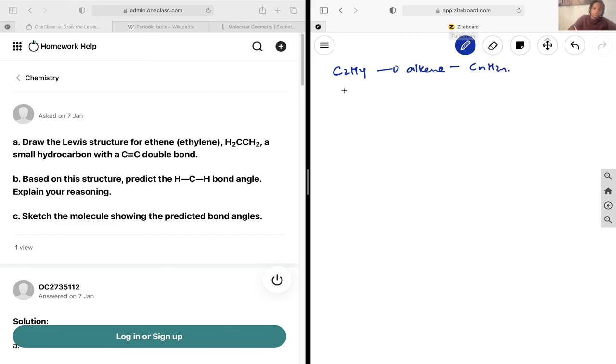We can count the valence electrons as we usually do: 2×4 plus 4×1. Let's label these - this is carbon, these are hydrogens. This gives us 8+4, so we have 12 electrons to work with.